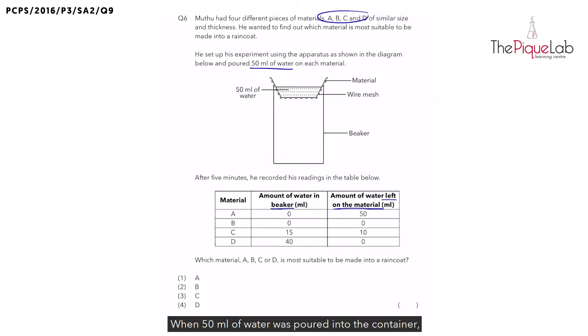When 50ml of water was poured into the container, some of the materials actually allowed the water to seep through the material. Whatever water that managed to seep through would be collected in the beaker. The water that cannot seep through will be left on top of the material itself.